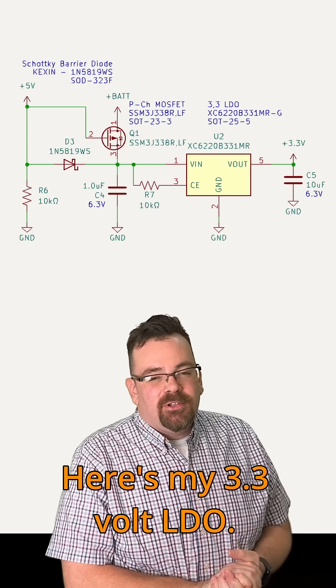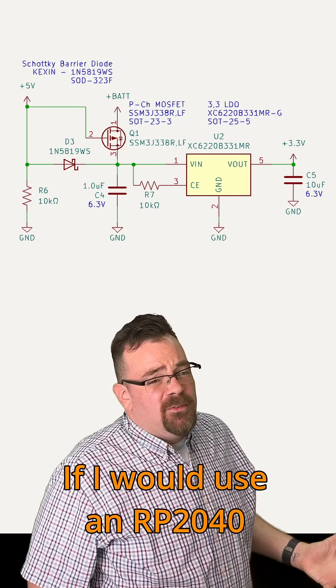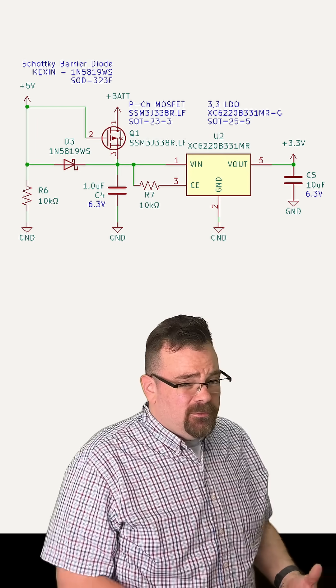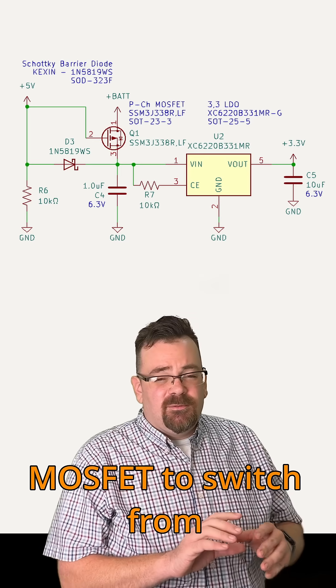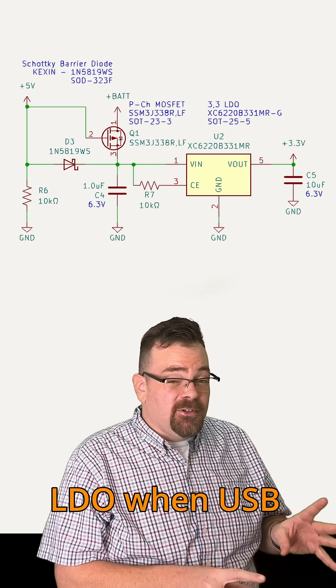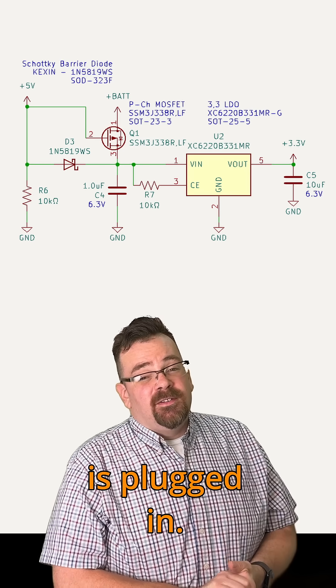And here's my 3.3 volt LDO. So if I use an RP2040 or an ESP32, I would need 3.3 volts. And I'm using this P-channel MOSFET to switch from battery voltage to the 5 volt power for the LDO when USB is plugged in.